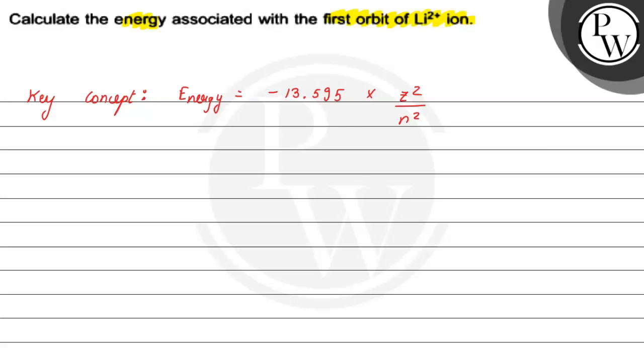When we apply this formula, energy = -13.595 × 3²/1². Lithium's atomic number is 3, and the first orbit is n=1.